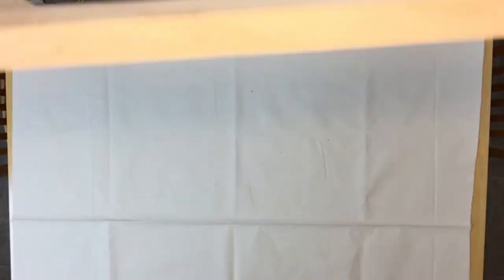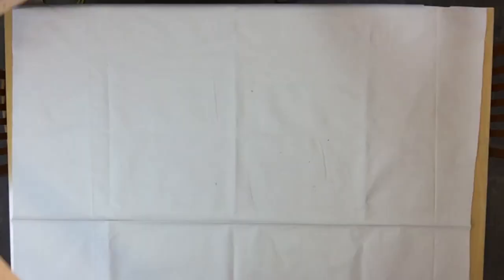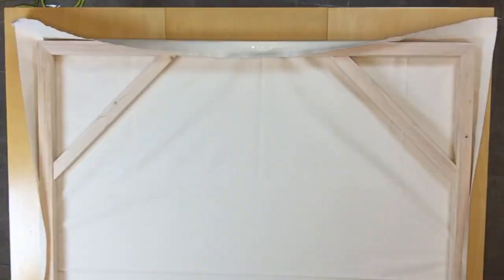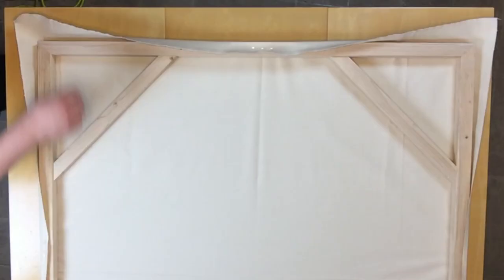I lay out my canvas on my kitchen table and then put my frame on it upside down and start stapling. I center the frame in the canvas and then I put a couple staples where I wanted to start. Then I move to its adjacent side, stretch the canvas tightly and add a couple staples. Then I rotate the frame 90 degrees and repeat.